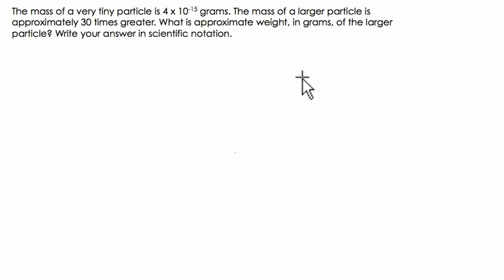Okay, so let's read this here. It says that the mass of a very tiny particle is 4 times 10 to the negative 15th grams. Alright, the mass of a larger particle is approximately 30 times greater.